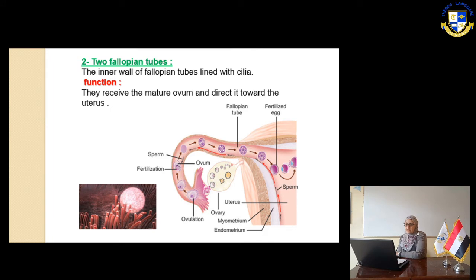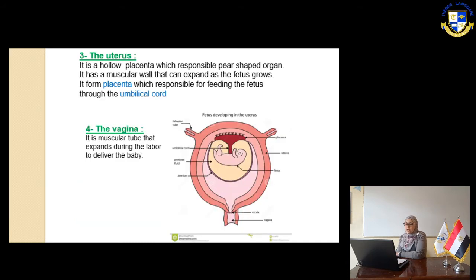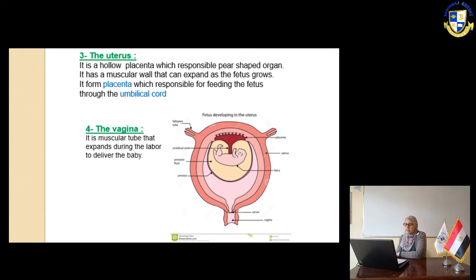Slide number 9. The inner wall of the fallopian tubes is lined with cilia. Their function is to receive the mature ovum and direct it toward the uterus. The sperm travel through the fallopian tube, and after the sperm meets the ovum, fertilization occurs, and the fertilized egg moves to the uterus. The uterus is a hollow, pear-shaped organ with a muscular wall that can expand as the fetus grows, forming the placenta and umbilical cord. The vagina is a muscular tube that expands during labor and delivery.